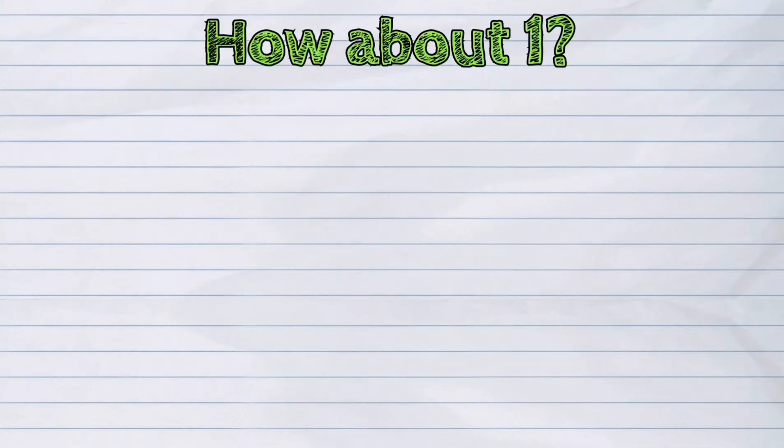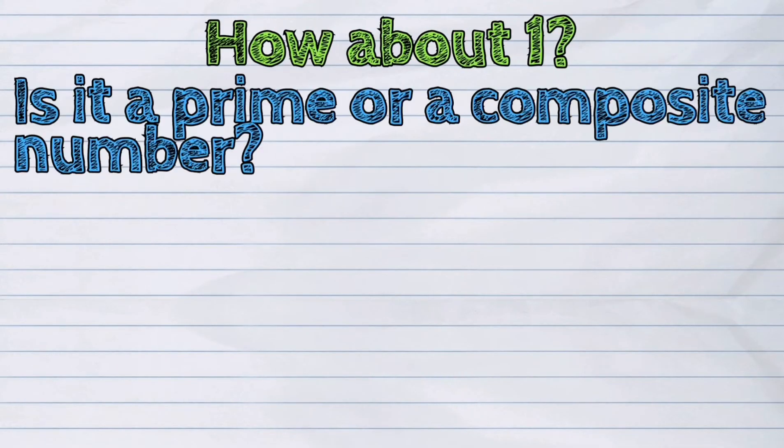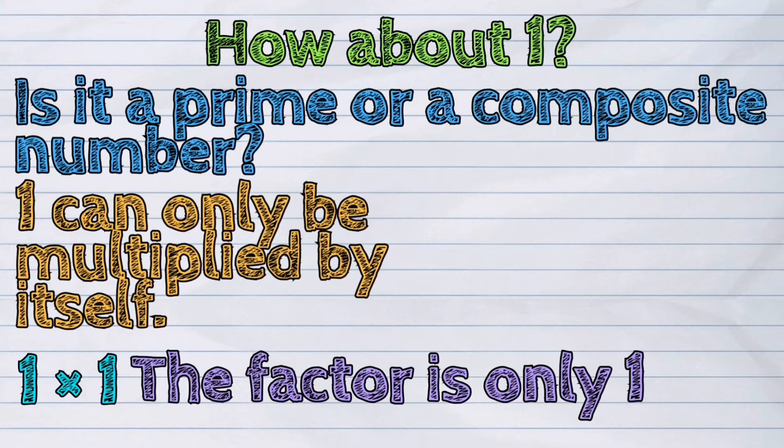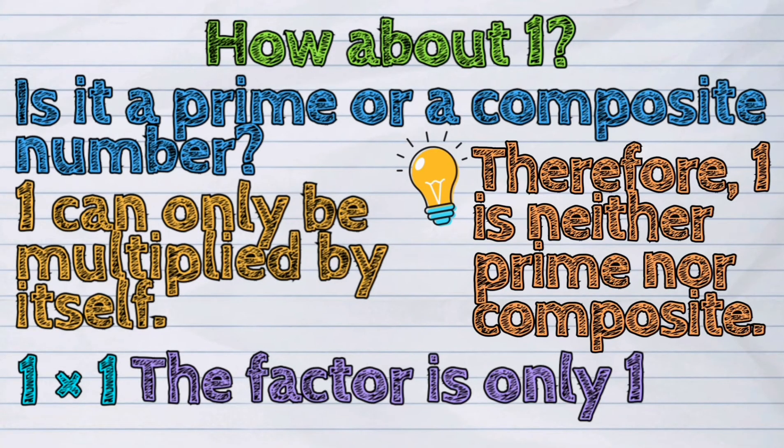How about one? Is it a prime or a composite number? One can only be multiplied by itself. One times one. The factor is only one. Therefore, one is neither prime nor composite.